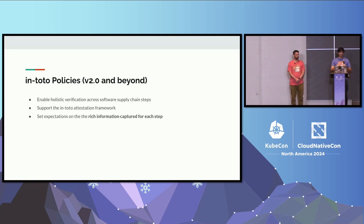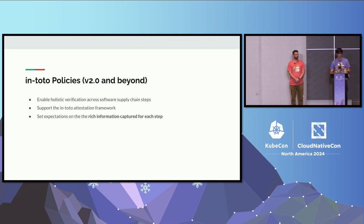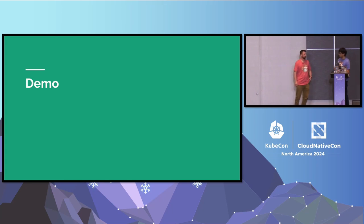For version 2 and beyond, the first thing is to continue the holistic across-all-steps verification properties of Intoto, and also support the attestation framework and leverage the rich information that attestations give us. Before the attestation framework, Intoto captured metadata for supply chain steps but it was more generic — it didn't distinguish between build provenance, a vulnerability scan report, and an SBOM. Without those notions, you couldn't cleanly set expectations based on the kind of data you were dealing with for a particular step.